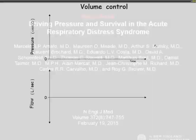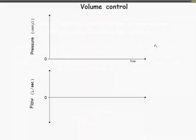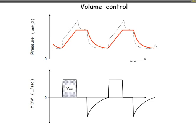First, a little bit of definitions. The driving pressure, which we discussed yesterday, is the swings in alveolar pressure. You need zero flow conditions to estimate driving pressure. So we are proposing that we use short inspiratory pauses, not long inspiratory pauses.